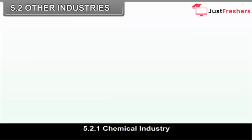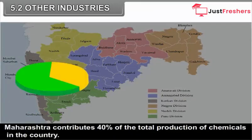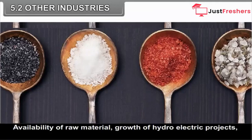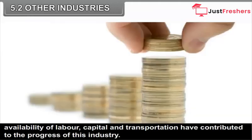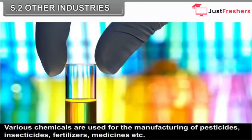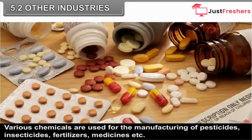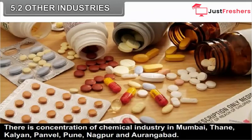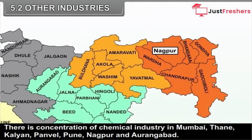Chemical industry is one of the most important industries of Maharashtra. Maharashtra contributes 40% of the total production of chemicals in the country. Availability of raw material, growth of hydroelectric projects, availability of labour, capital and transportation have contributed to the progress of this industry. Various chemicals are used for manufacturing of pesticides, insecticides, fertilizers, medicines, etc. There is a concentration of chemical industry in Mumbai, Thane, Kalyan, Panvel, Pune, Nagpur and Aurangabad.